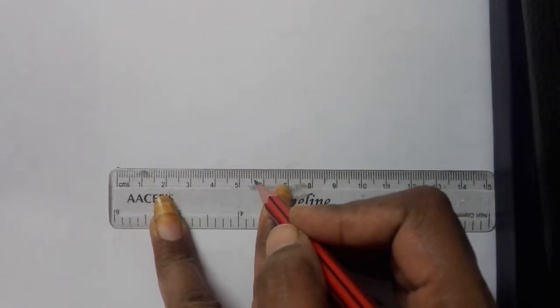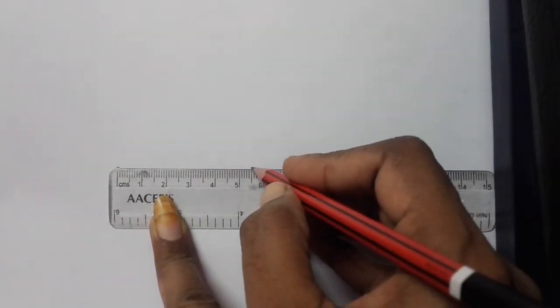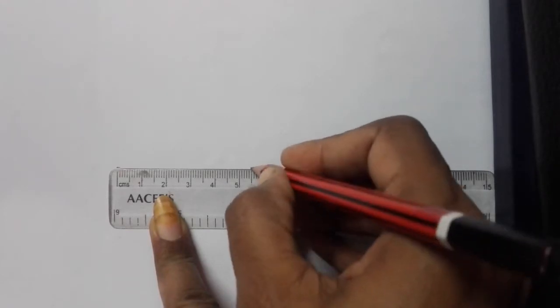In between both of them, there is a long line. That is 5.5. Mark a point there.